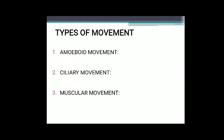Muscular Movement: Muscular tissues help in the movement and locomotion, that is, they help in the movement of eyelids, tongue, limbs, blood, blood vessels, heart, and so on. This movement requires coordination between muscular, skeletal, and nervous activities.